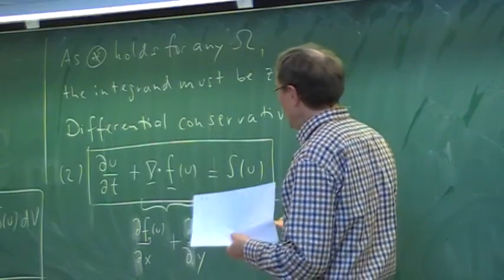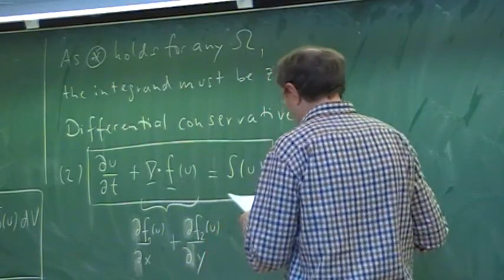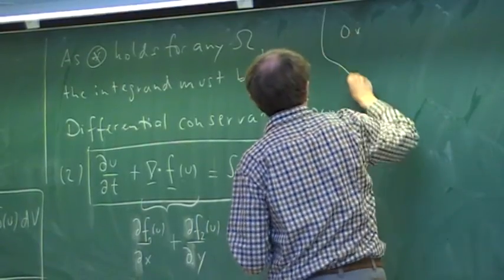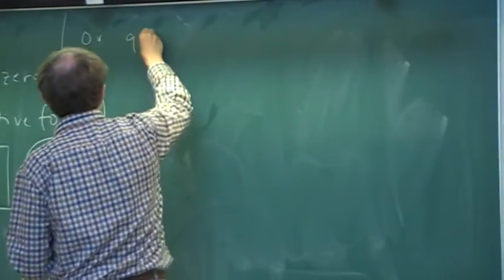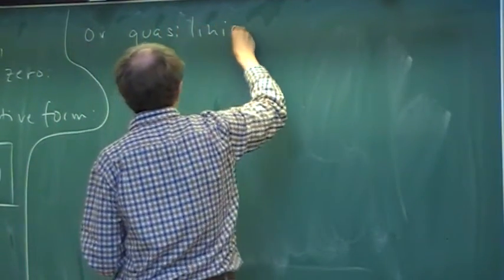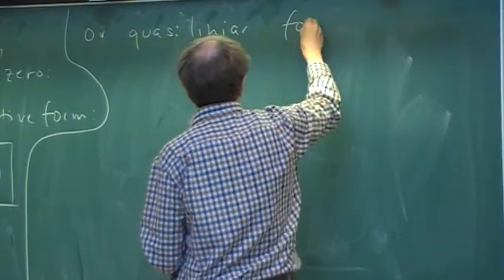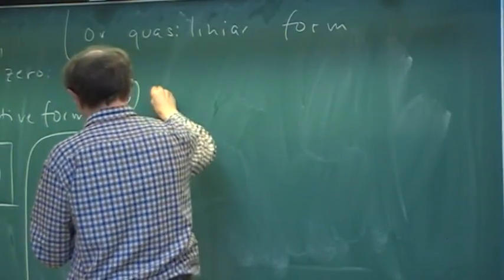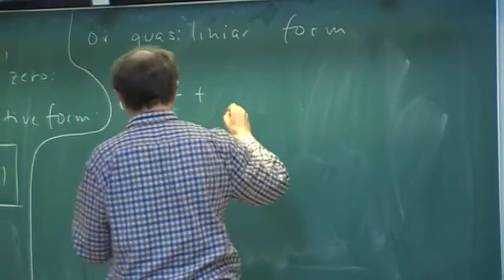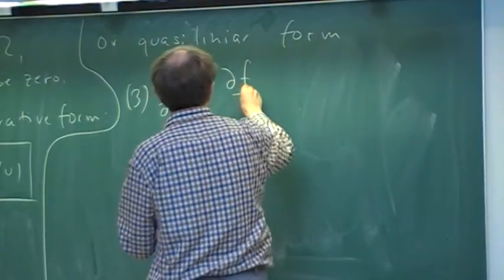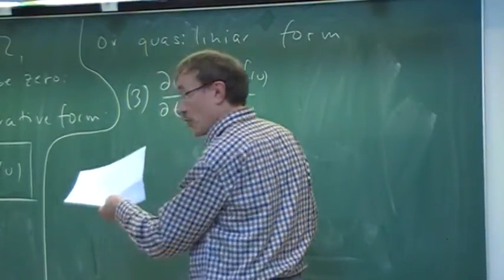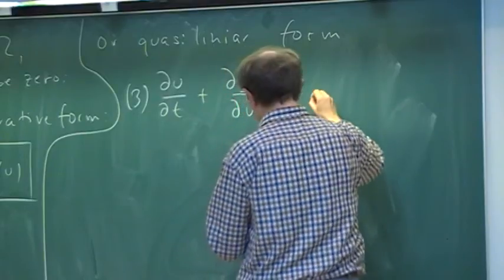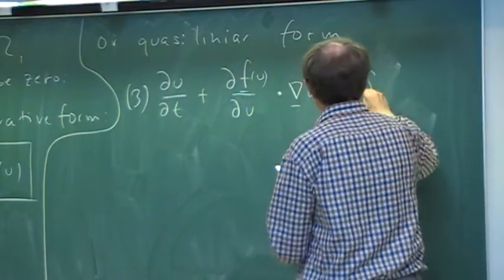We have the conservative form, and we can also write it in quasi-linear, non-conservative form. Applying the chain rule, we write du/dt plus df(u)/du dotted with nabla u equals s(u). This gives us du/dt plus df1/du times du/dx plus df2/du times du/dy equals s(u).